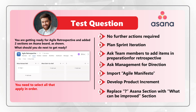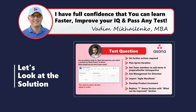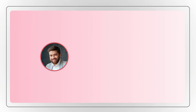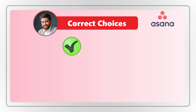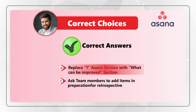Take a close look — maybe pause this video to see if you can get to the correct answer. I believe the correct answer here are choices G and C in order. Choice G: Replace the question mark Asana section with 'what can be improved' section. And then Choice C: Ask team members to add items in preparation for retrospective.